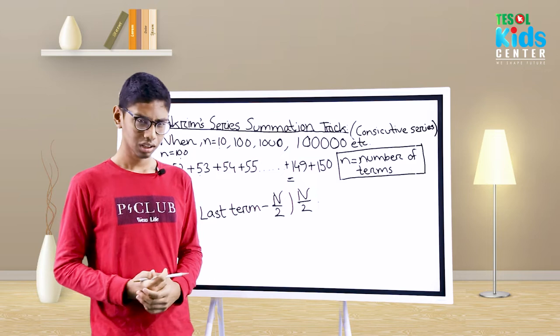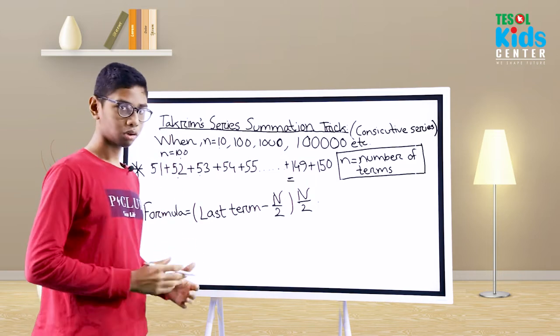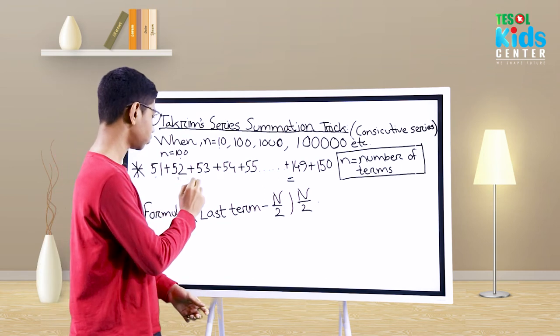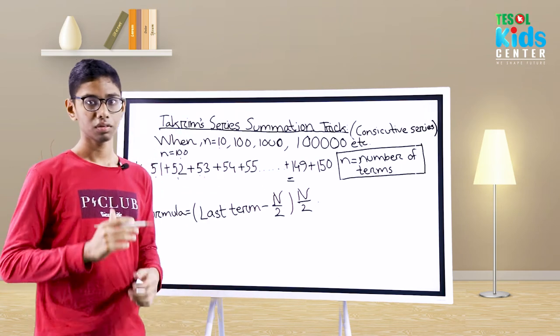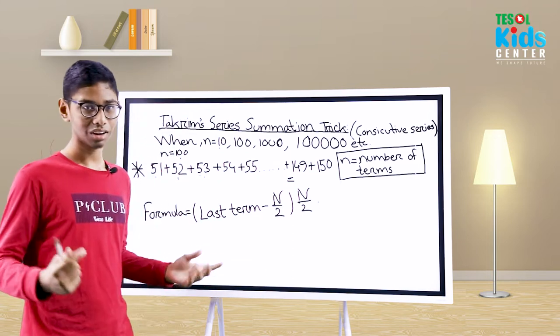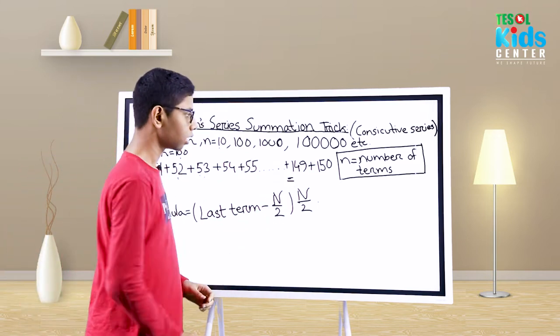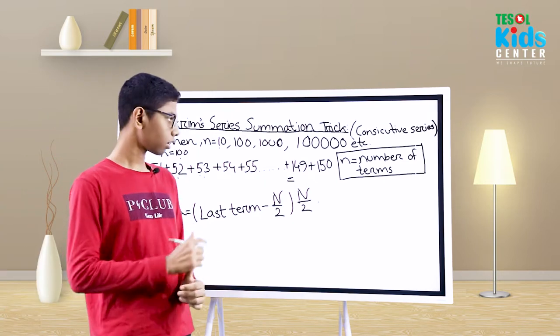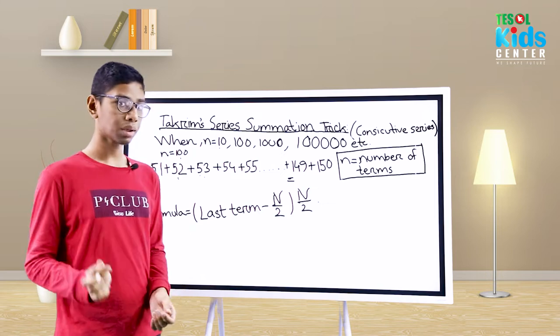The sequence is 51, 52, 53, 54, 55, 56, 57, and so on. There is a formula to solve it. There are 100 numbers, and it's also applicable if the number would be 1000, 10,000, 1 million, etc.